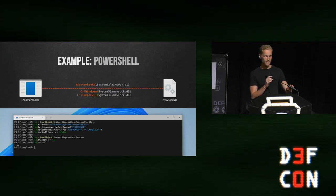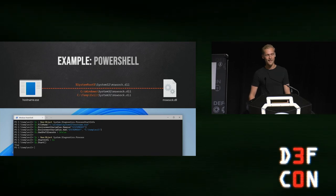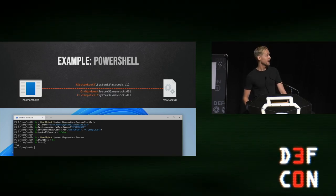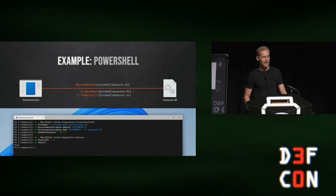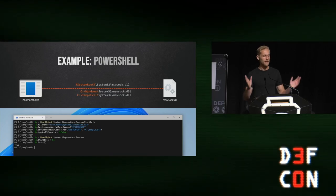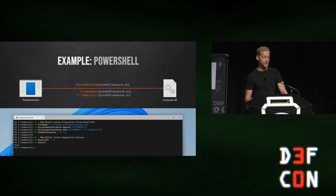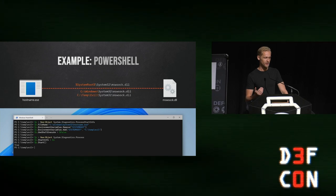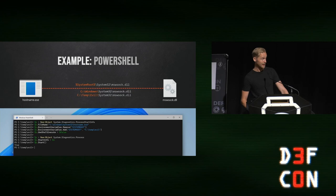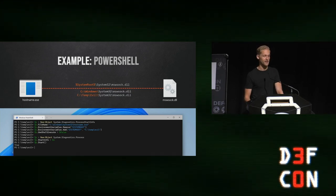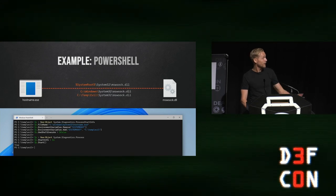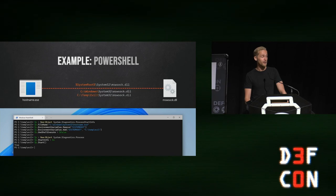Here is a working example. In System32 there's an executable called hostname.exe — it's very simple, it just prints the name of your computer. But it turns out that if you run it without any command line arguments, it will load three DLLs dynamically, one of which tries to load from the SYSTEMROOT folder — specifically SYSTEMROOT\System32\mswsoc.dll. Normally that means it loads from C:\Windows\System32\mswsoc.dll. However, if I change the SYSTEMROOT environment variable using PowerShell, I can alter the path and trick it into loading my DLL instead.